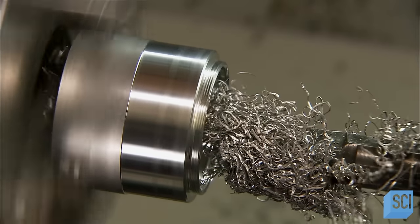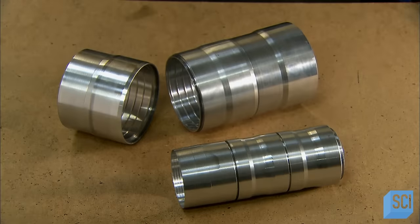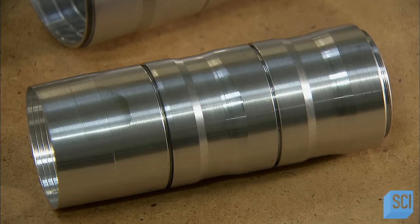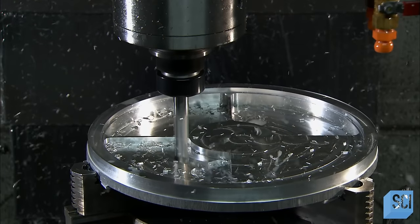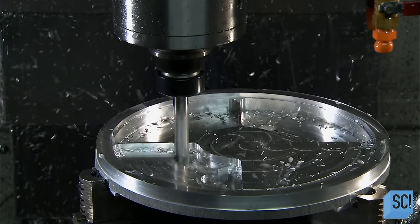These are baffles, and when screwed together, they'll block stray light that would interfere with the telescope's operation.